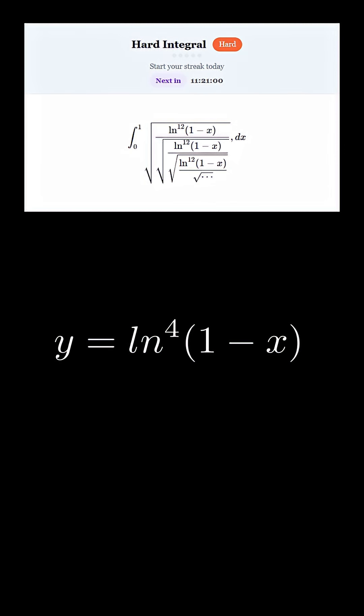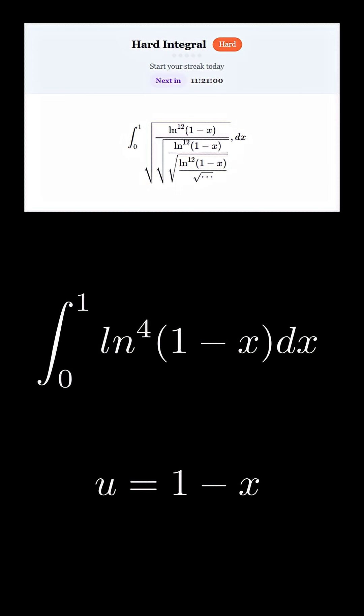So we are just now integrating natural log to the fourth power of 1 minus x. And let's do a u-substitution where u equals 1 minus x. So therefore, negative du equals dx.